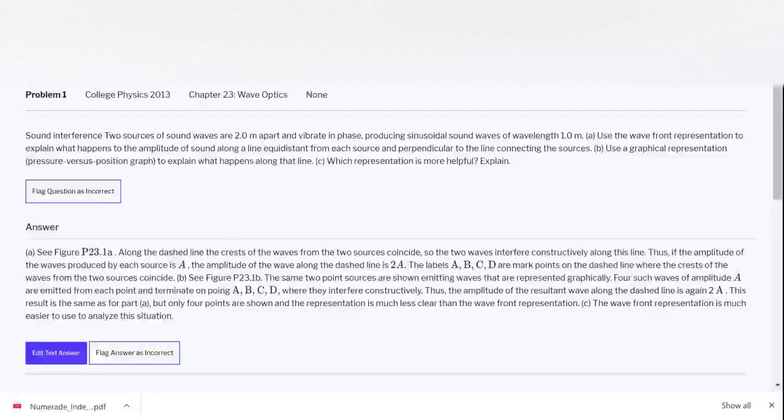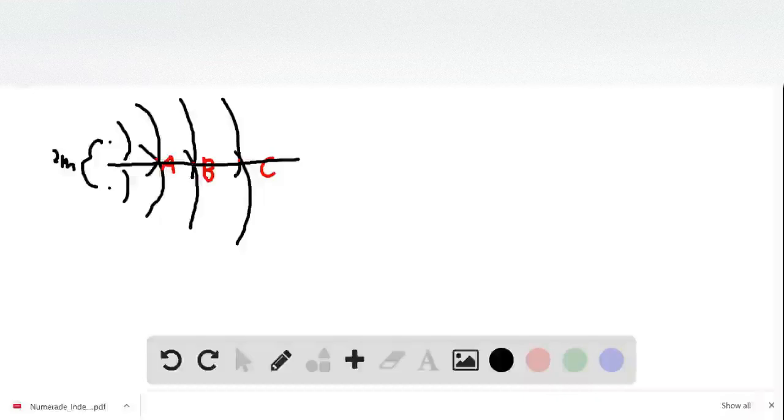From the question, we know that two source waves are two meters apart. This is the first representation I created, which is the wavefront representation. You can see here there's a line.